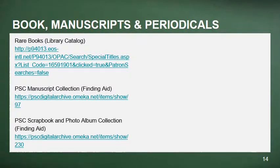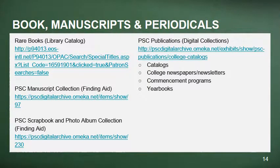We also have scrapbooks and photo albums — some are fragile but have great information about campus life from the early 1930s to about the 1990s, including photographs and news clippings from PSC newspapers as well as local and regional news outlets. The PSC publications collection is definitely the one used most here in the archives. It includes catalogs, college newspapers and newsletters, commencement programs, and yearbooks, which are definitely one of the most requested items. You can go to the link on this page to browse through the collections.